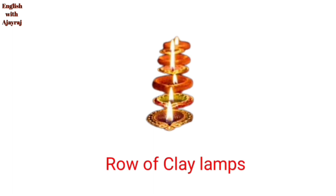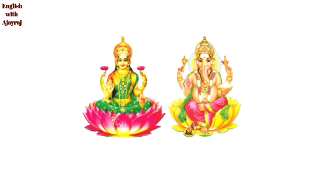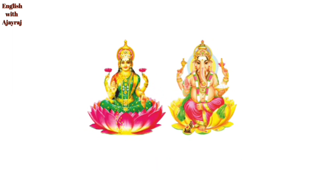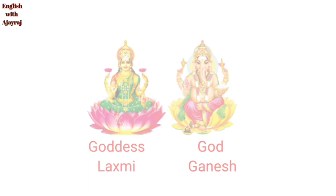This one is called string light — it is used to decorate the home. This is a row of clay lamps, or simply a row of lamps. This is Goddess Lakshmi on the left side and this is God Ganesh on the right side.